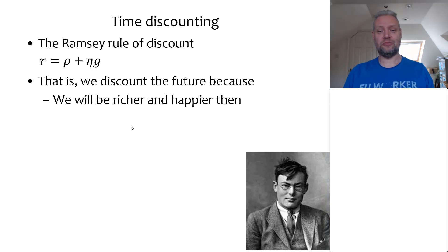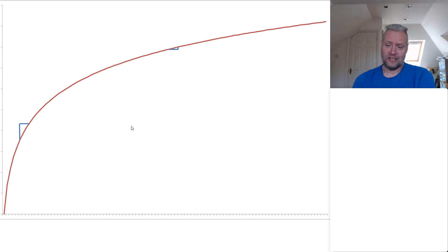And the second component of the Ramsey rule of discount is that we discount the future because we will be richer and happier in that future. And that can be shown graphically. So what you see here is a utility function where utility is on the vertical axis and consumption is on the horizontal axis. And the question is how would you evaluate the savings decision? And savings, essentially what you do is you give up some of your current consumption, you save more and therefore you consume less. And in return you will have higher consumption in the future when you take savings out of the bank and you use it for something that at that time you are particularly interested in.